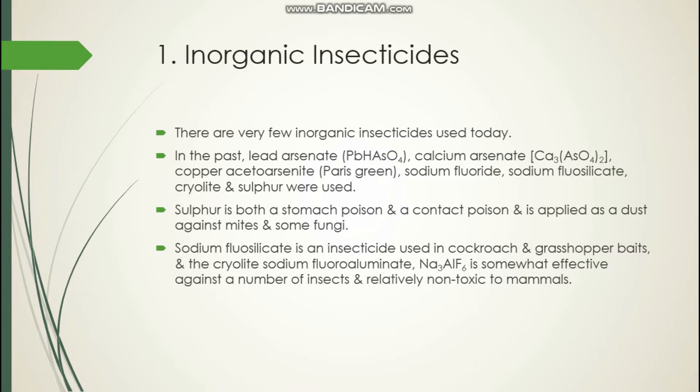Inorganic insecticides — there are very few inorganic insecticides. In the past, lead arsenate, calcium arsenate, copper aceto arsenide, sodium fluoride, sodium fluorosilicate, cryolite and sulfur were used as inorganic insecticides. Sulfur is both a stomach poison as well as a contact poison, and it is applied as a dust against mites and some fungi. Sodium fluorosilicate is an insecticide used in cockroach and grasshopper baits. Cryolite, sodium fluoroaluminate, is somewhat effective against a number of insects and relatively non-toxic to mammals.